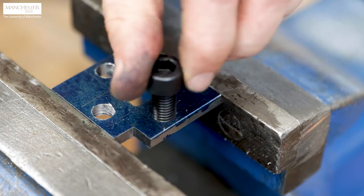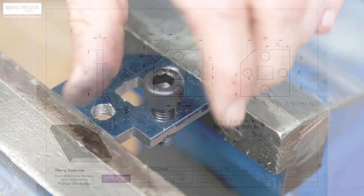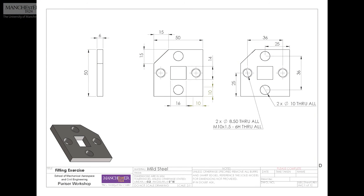We can test the threads by an M10 machine screw. This completes the benchtop practice session activity. We have seen how to produce this part as per the drawing using benchtop tools and drill press. Thanks for watching.